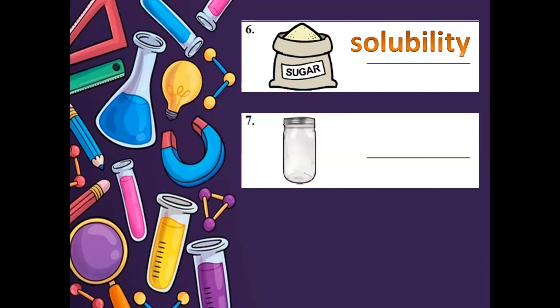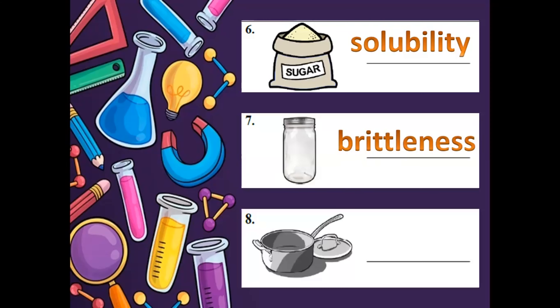Number seven — a jar, garapon. The property that can be used to describe garapon or jar is brittleness. Why? Pag nalaglag si garapon, mabilis siyang mabasag. So the property that can be used to describe jar, glass bottle, or baso is brittleness — mabilis mabasag.